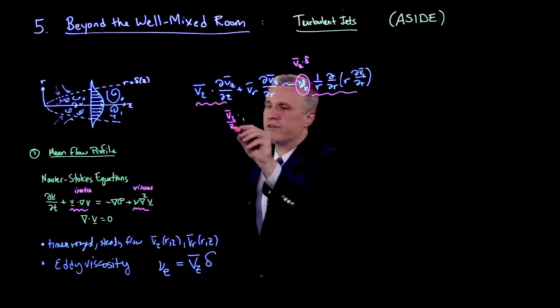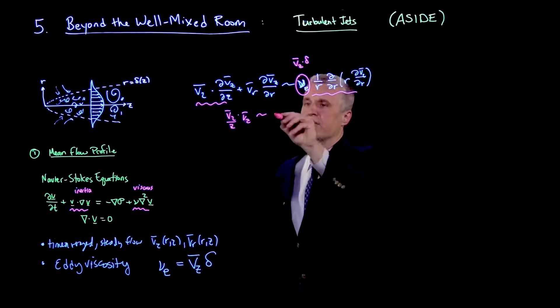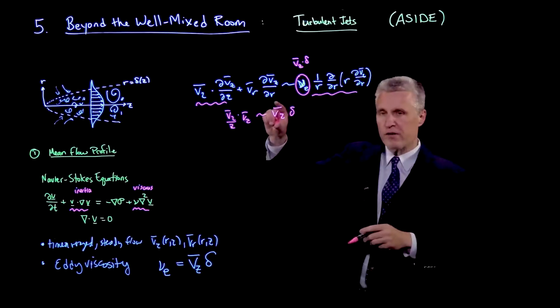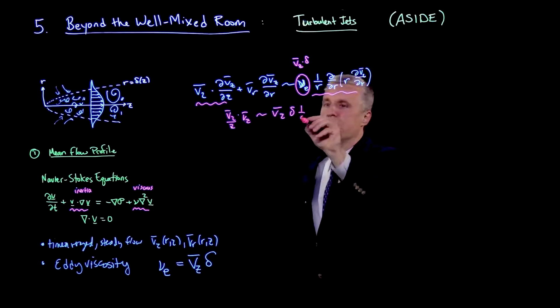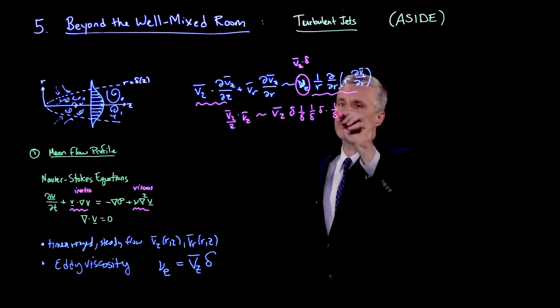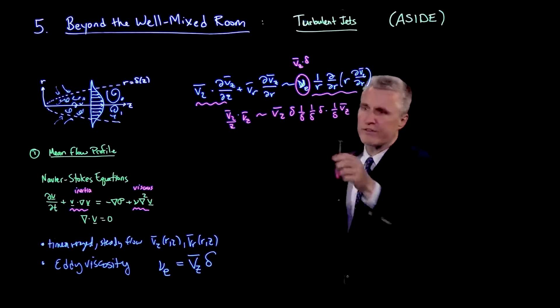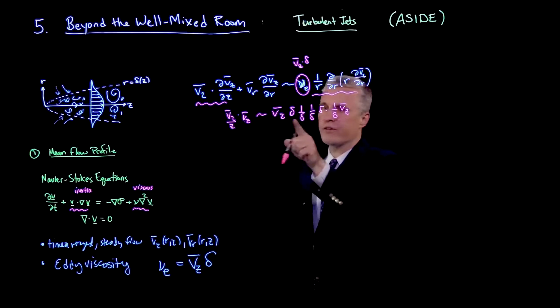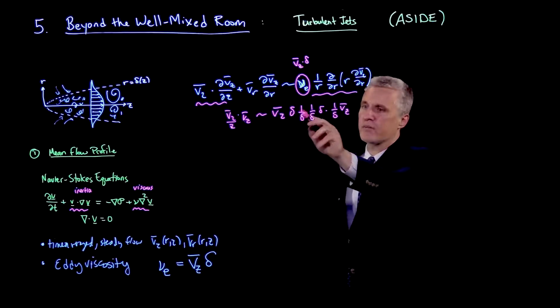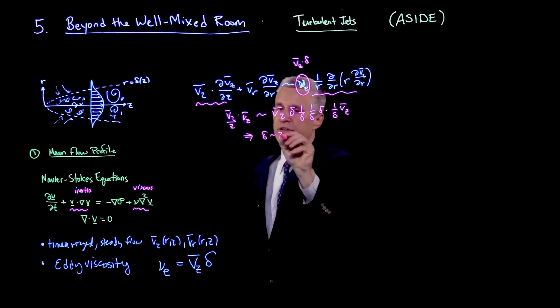So if I look at vz divided by z times vz, so that's a scaling of those two terms, I can balance that against vz delta times, and the scale for r is delta. So I have 1 over delta for the 1 over r, 1 over delta for the derivative times delta times 1 over delta vz. So there's a lot there, but notice the vz's all cancel. And we're left with a bunch of deltas here. And because of the eddy viscosity, we are left with all of this is just 1 over delta. There's a 1 over z, and so we find here that delta scales as z.